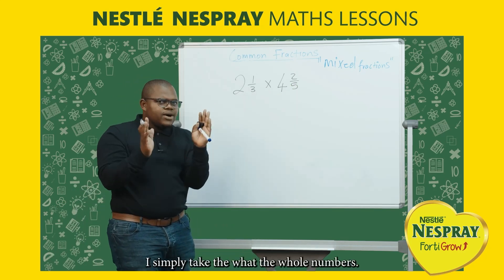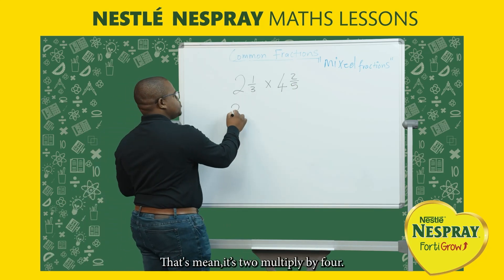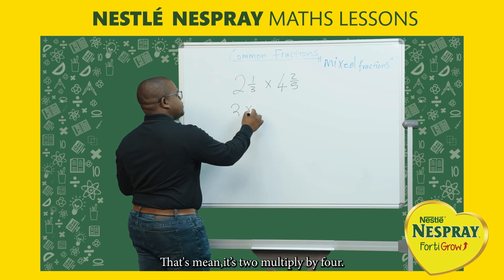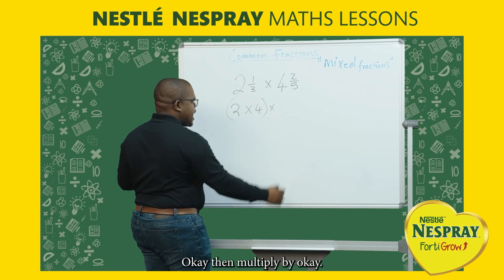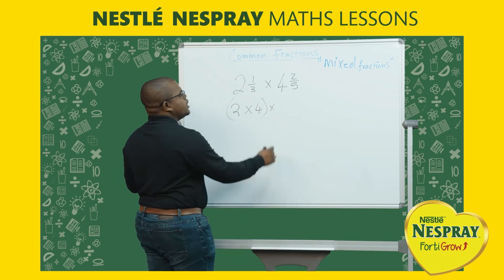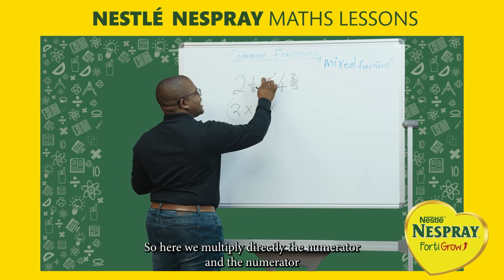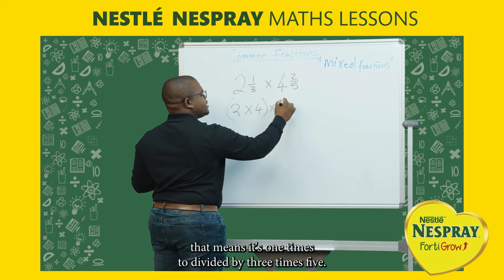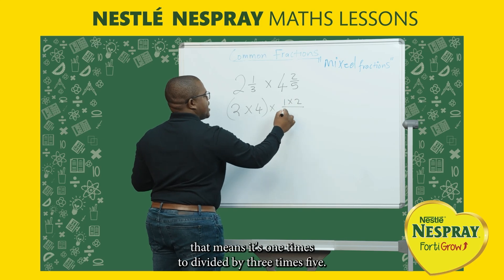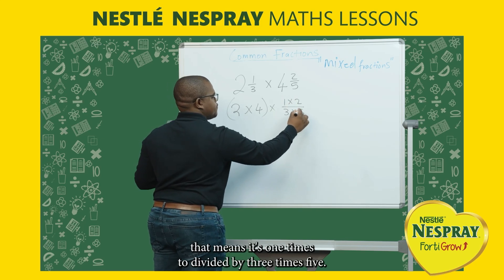I simply take the whole numbers — that means it's 2 multiplied by 4. Then we multiply directly the numerator and the numerator. That means it's 1 times 2, divided by 3 times 5.